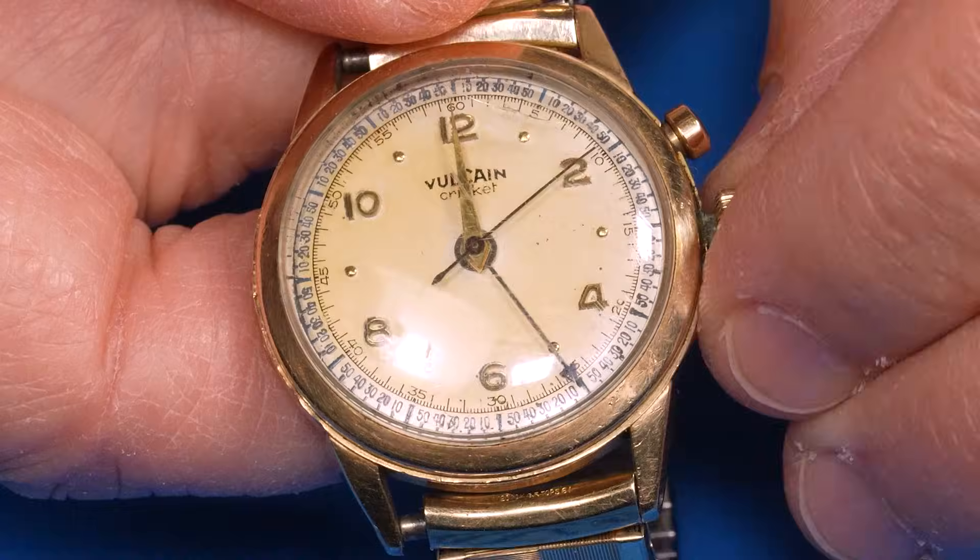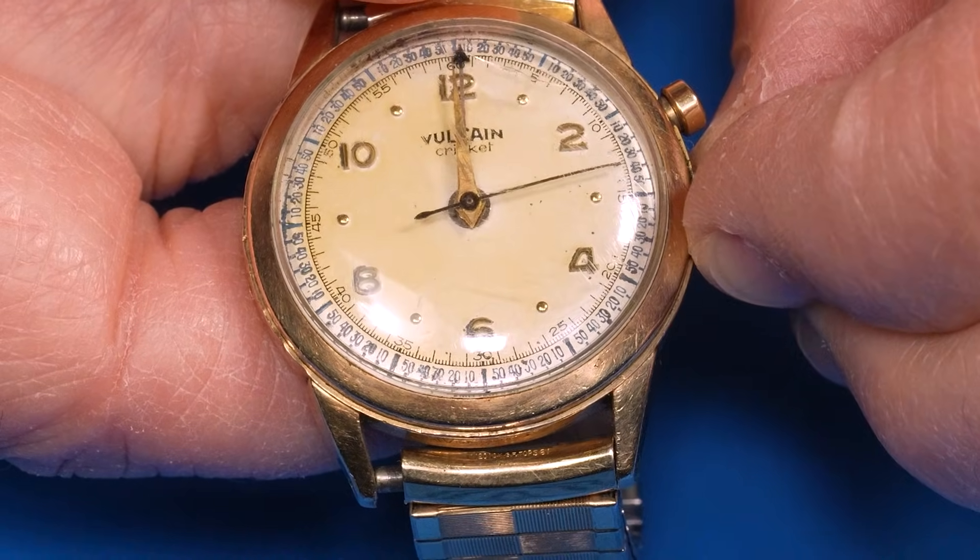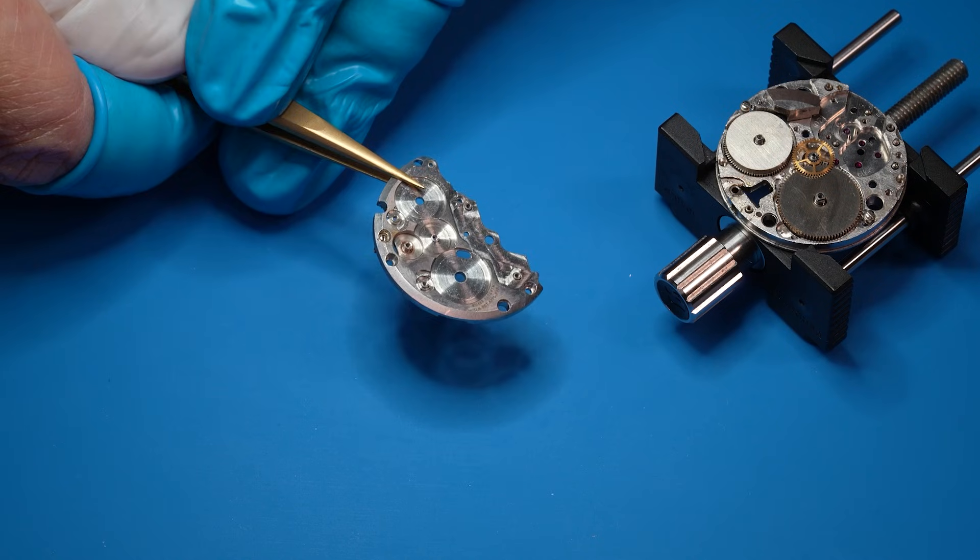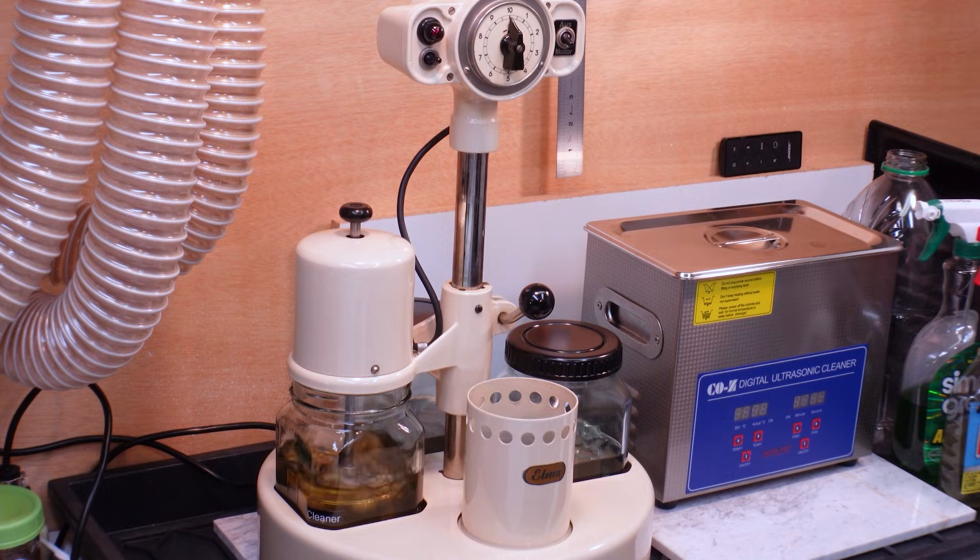Welcome back! Here's what you may have missed. I'm doing a complete service on this beautiful Vulcane Cricut alarm watch. The disassembly went very well and I cleaned all of the parts in my new vintage Elma watch cleaner. That video is live and I'll share a link in the comments if you'd like to watch.